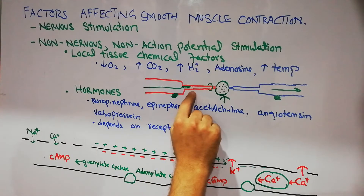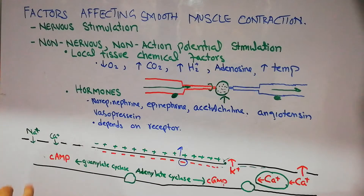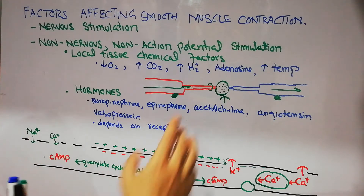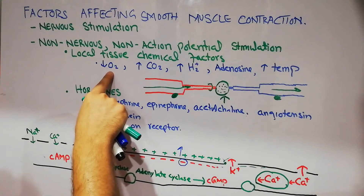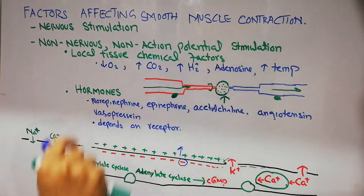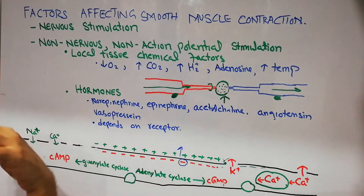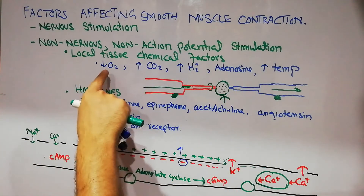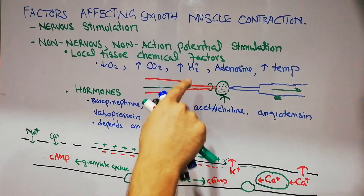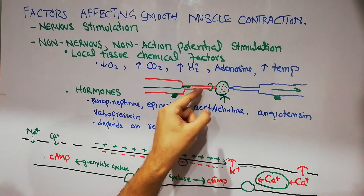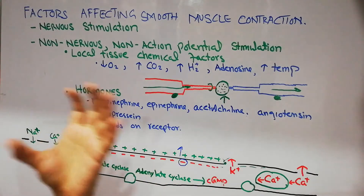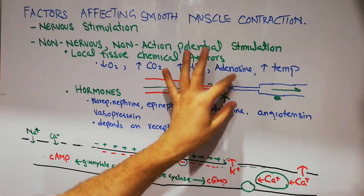If a tissue needs more blood than usual and the smooth muscles in the arterioles and capillaries are contracted, more blood cannot come in. When demand increases, local changes occur: oxygen decreases, carbon dioxide increases, hydrogen increases, adenosine increases, or temperature increases. These changes will cause relaxation of the smooth muscles. When relaxation occurs, the venules, arterioles, or capillaries expand — their diameter increases and more blood flows in.